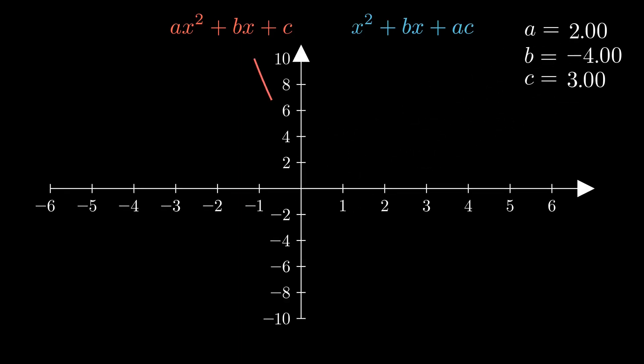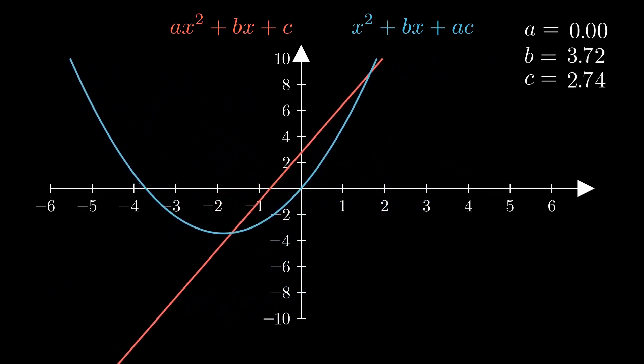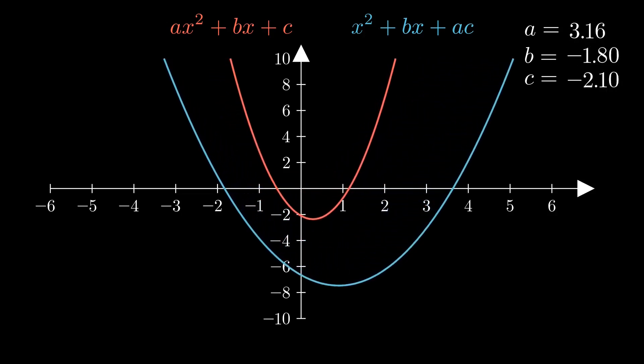Here's the graph of ax squared plus bx plus c, and x squared plus bx plus ac. It's not immediately clear what the relationship between these graphs is, but sometimes it's easier to see if we look at a lot of different examples. Let's animate a bunch of those values, and see that relationship in motion.